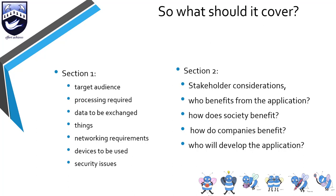Devices to be used is similar to things, and you're welcome to tie them together, but devices to be used takes it beyond the actual device you're talking about. The 'things' section is about the specific device — say the door lock and the phone — whereas devices to be used talks about the management console, the management device, the system used to control information and override devices. If you're connecting to a network, are you going to require them to have a server, switch, repeater, hub, or router? It's a much broader scope.